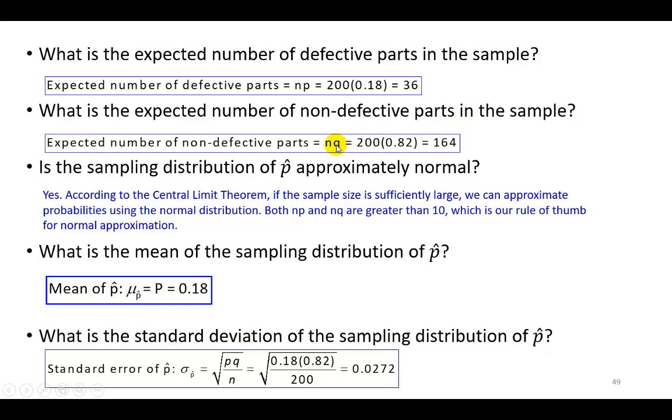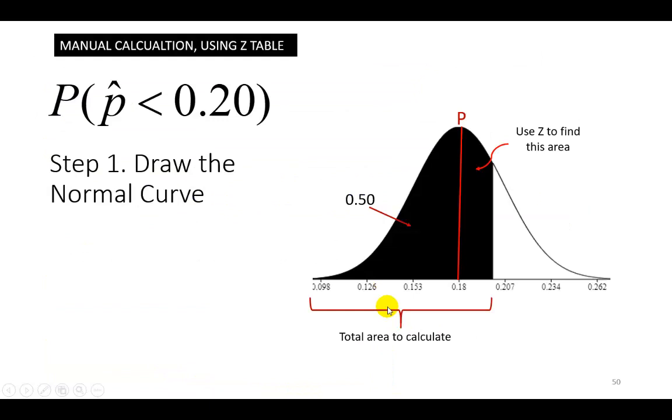This question says, is the sampling distribution of p hat approximately normal? And the answer is certainly yes, because by appeal to the central limit theorem, both np and nq are going to be more than 10, as you have already seen here. So it satisfies our rule of thumb. The mean of the sampling distribution of p hat is going to be the population proportion of 0.18, and the standard error is going to come out to be 2.72%.